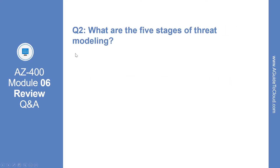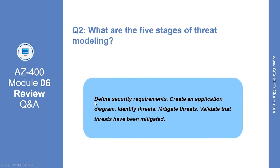What are the five stages of threat modeling? The five stages are: define security requirements, create an application diagram, identify threats, mitigate threats, and validate that threats have been mitigated.